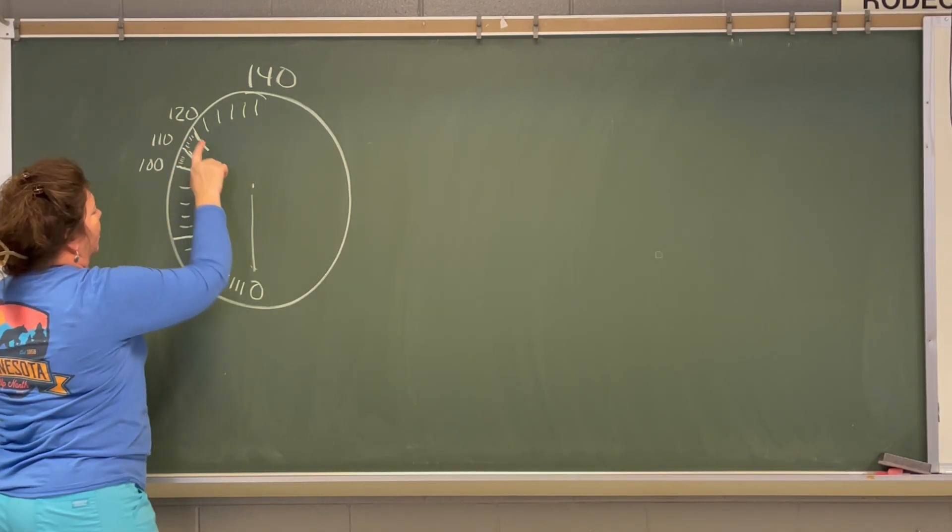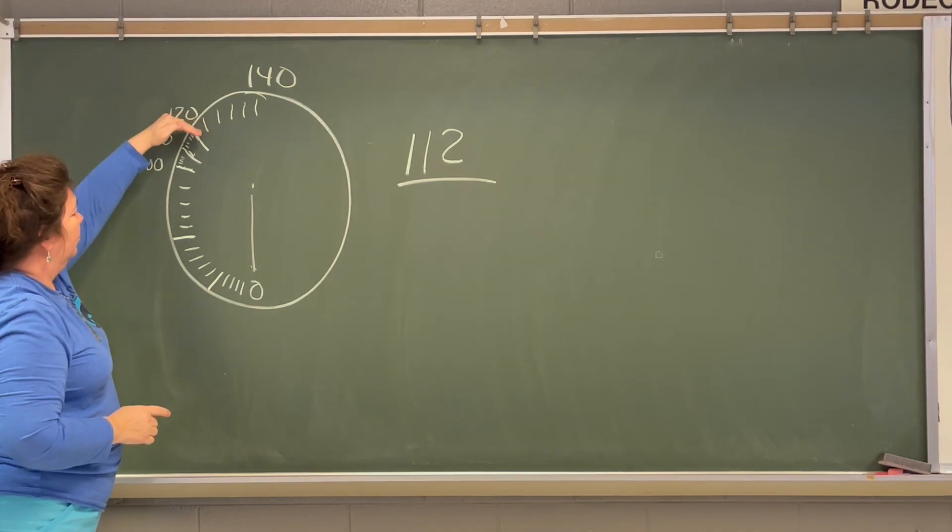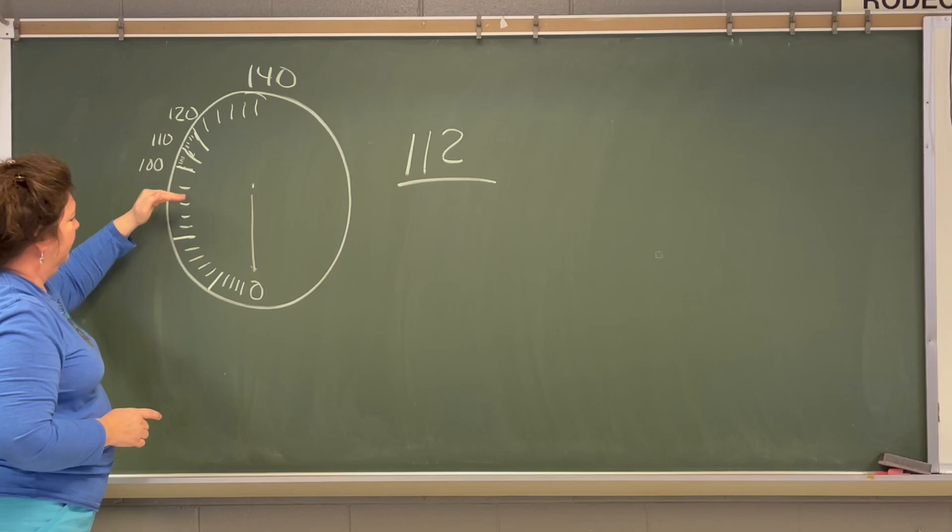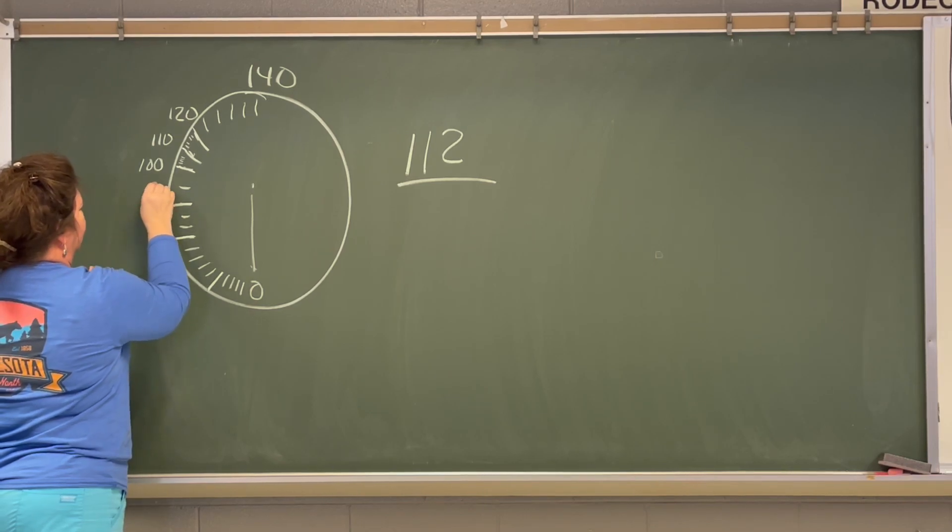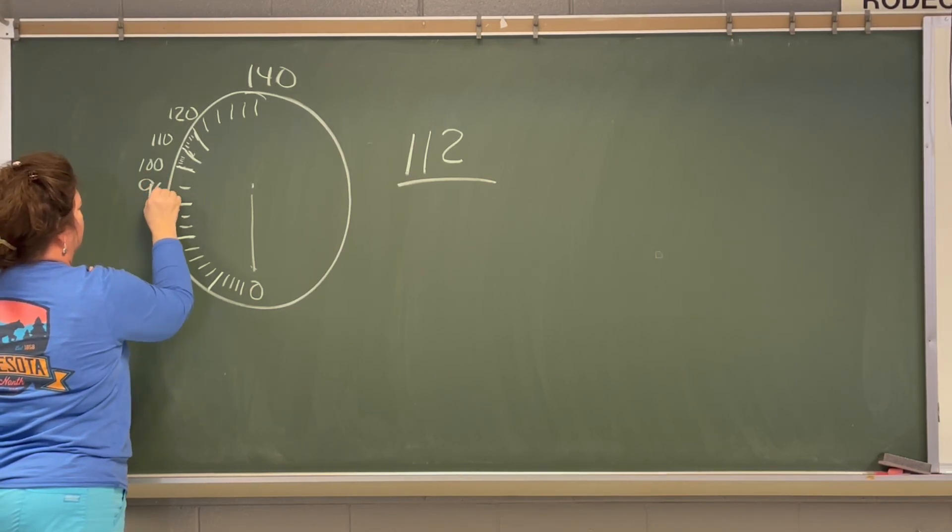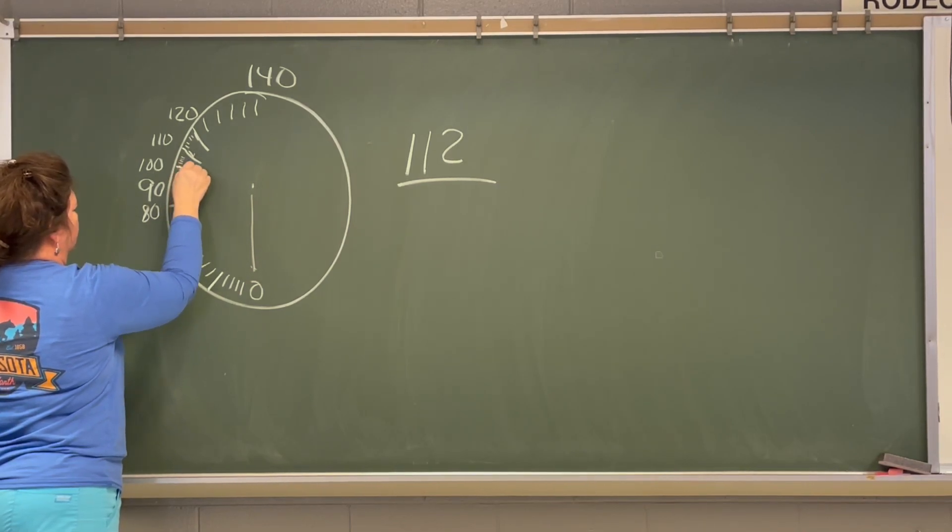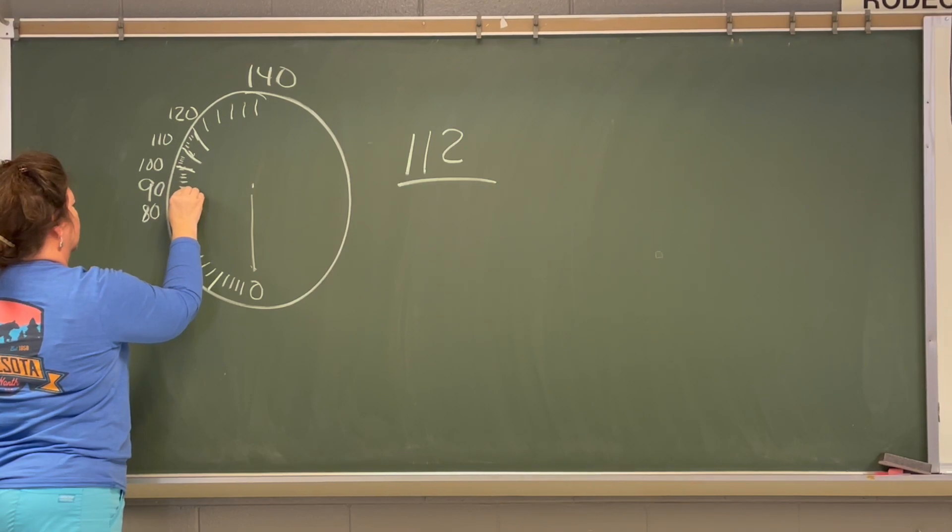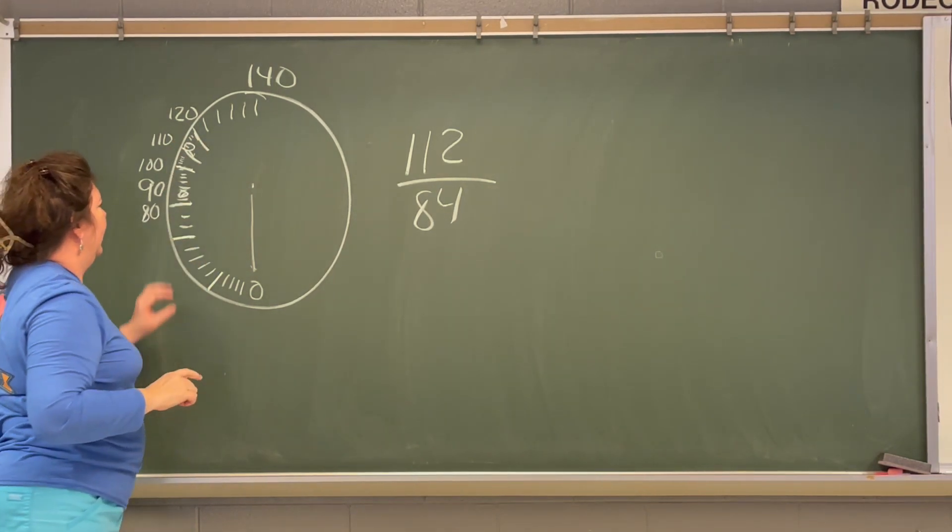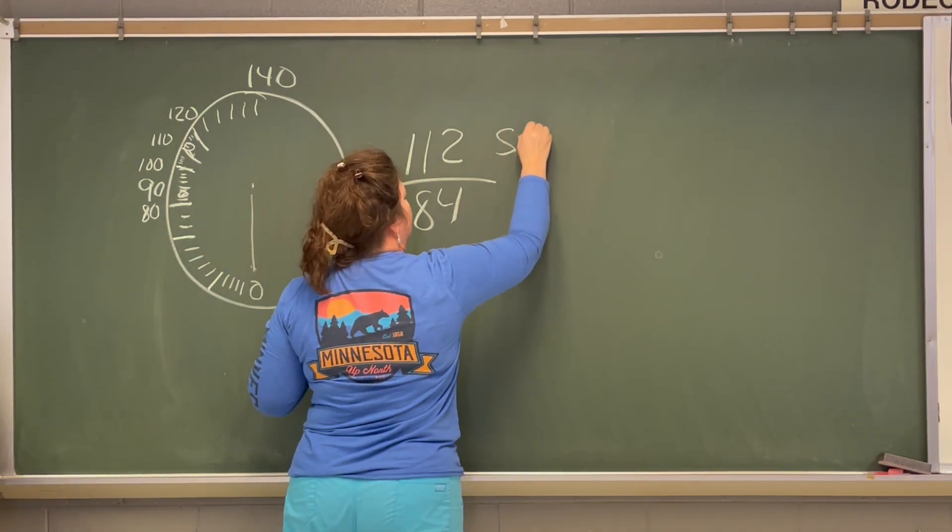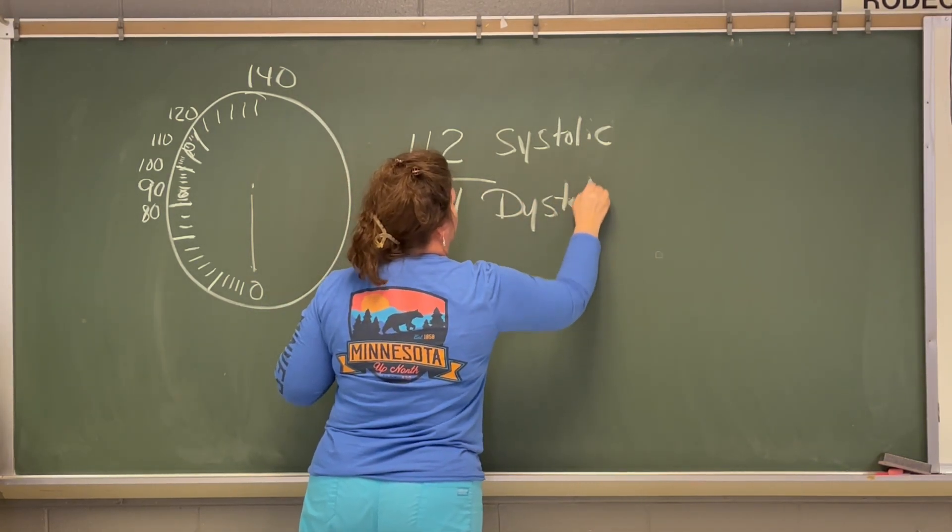If it stops here and you hear your first bump, then your blood pressure would be 112 over and then it keeps coming down. Boom, boom, boom, boom, boom, boom, right here. And let's say it stopped at 84.